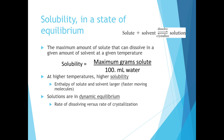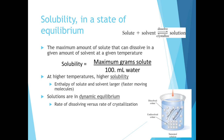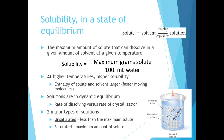Solutions are in dynamic equilibrium, where we have a rate of dissolving versus a rate of crystallization — this process is always occurring. There are two major types of solutions in relation to this dynamic equilibrium. We have unsaturated solutions, where less than the maximum amount of solute has been dissolved, and a saturated solution, where we're at the maximum amount of solute. For an unsaturated solution we can always dissolve more solute, but in a saturated solution, any additional solute will stay as solid at the bottom of the container.